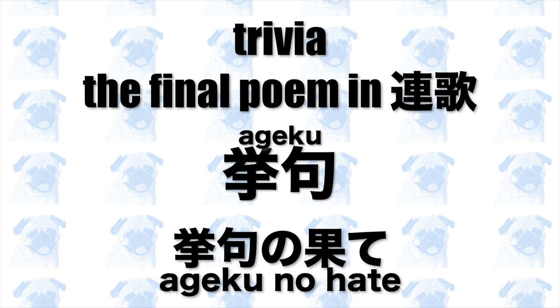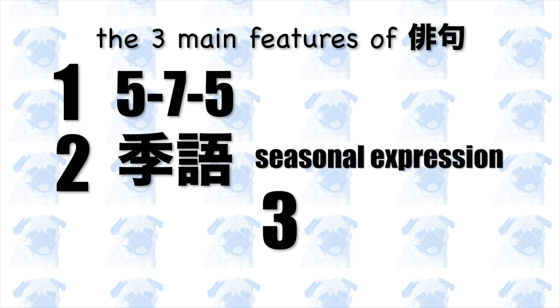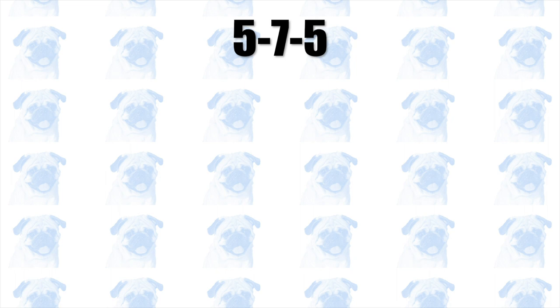Haiku has three main characteristics that you should know: 1. Gohichigo — the 5-7-5 rhythmic pattern. 2. Kigo — words that express seasons. 3. Kire — the concept of cut. The most definitive feature of haiku is that it is a fixed verse form, or teikeishi. Normally, a haiku consists of 17 moras.